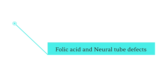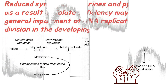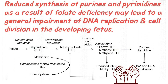There are different mechanisms that have been explained to relate folic acid deficiency and neural tube defects. The first mechanism is that folate shortage may cause a general impairment of DNA replication and cell division in the growing fetus due to reduced synthesis of purines and pyrimidines.